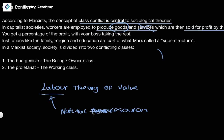Marx believed that if we take natural resources and infuse them with a certain amount of labor, the value of the commodity results. So if the bourgeois owner class is taking a percentage of profits without putting any labor in themselves, then what is happening is you are alienating the worker from their labor. This is the theory of alienation, relating to the human condition under capitalism.